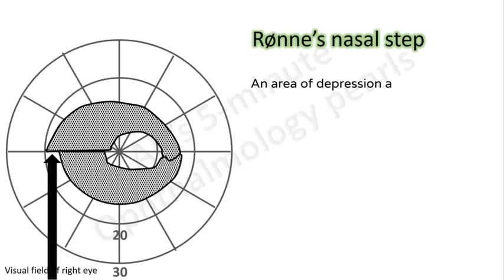A nasal step is an area of depression above or below the horizontal meridian on the nasal side. This may occur in the central or peripheral fields, in isolation or in conjunction with other scotomas. It is always present at the nasal meeting point of superior and inferior arcuate scotomas.